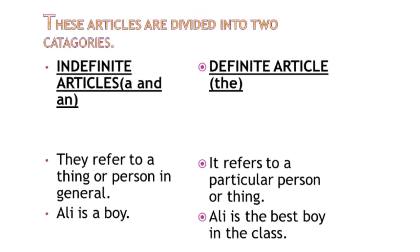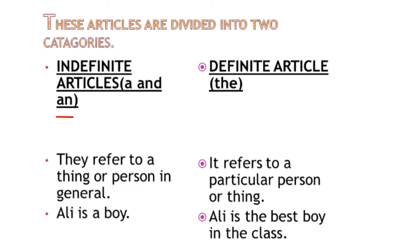There are two categories of articles. First is indefinite articles, which includes 'a' and 'an'. Second is the definite article, which includes 'the'.